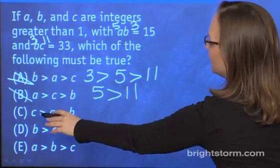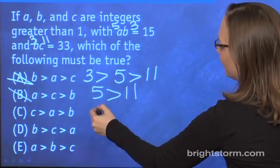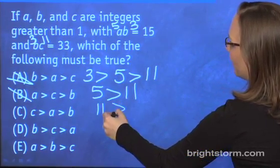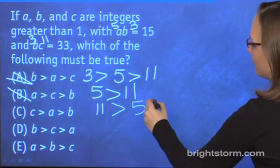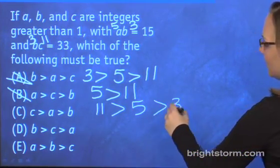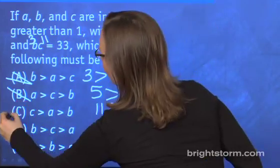c. c is greater than a. That's 11, which is greater than a, which is 5. And is that greater than b, which is 3? Yes, we found our answer, so we can quit now.